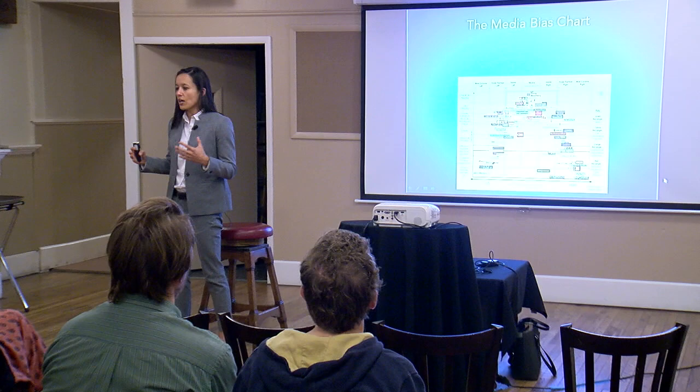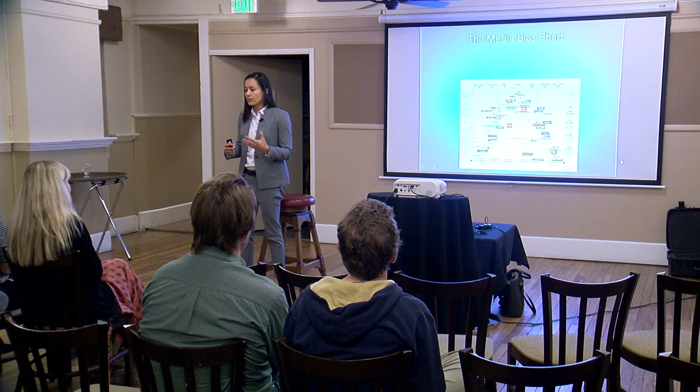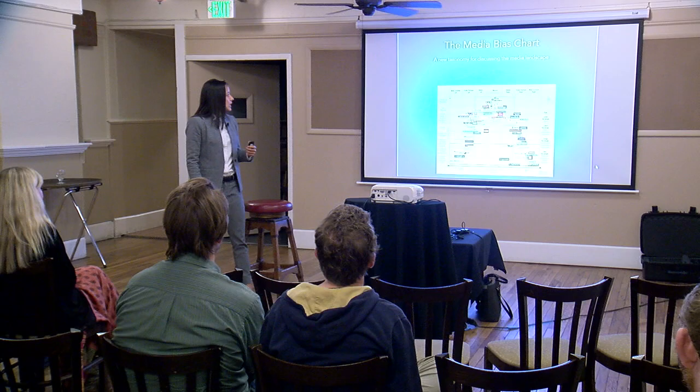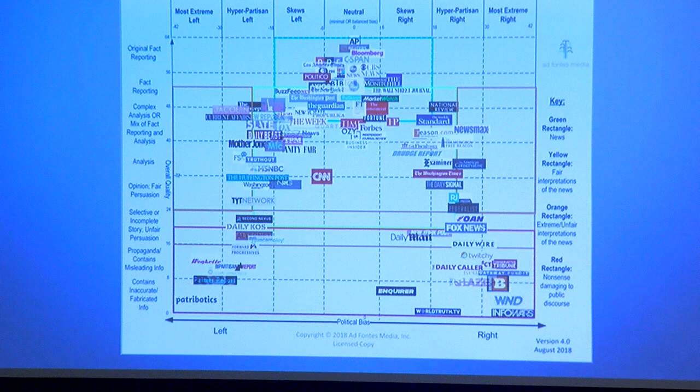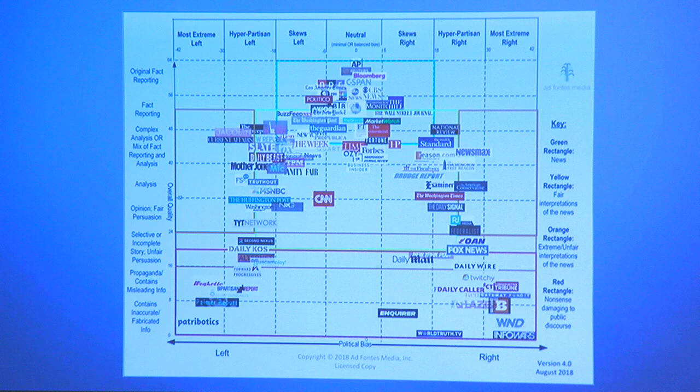The media bias chart — a lot of you have seen it on the internet, maybe seen previous versions over the last two years. This is about its fourth iteration, and it's really two things: one, it's a new taxonomy for discussing the media landscape, a system of classification; and two, it's a methodology for rating quality and bias on that taxonomy. I first had to create the world in which you talk about it, and then create the methodology for placing things in a fixed time and space on that chart.